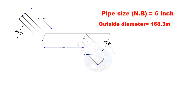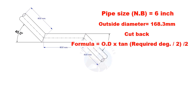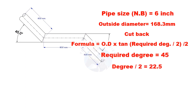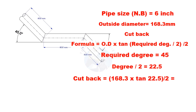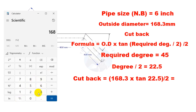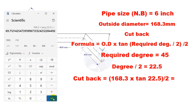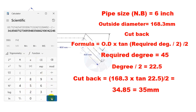The outside diameter of a 6 inch pipe is 168.3 millimeters. Cutback is OD multiplied by tan of half the degree, divided by 2. Here, the required degree is 45. Half of 45 is 22.5. Let us calculate. The cutback is nearly 35 millimeters.